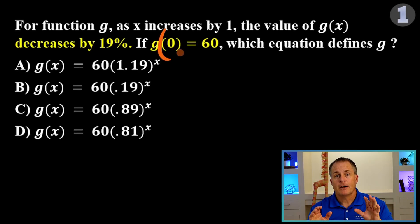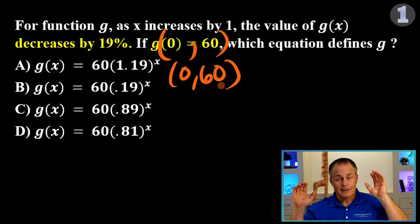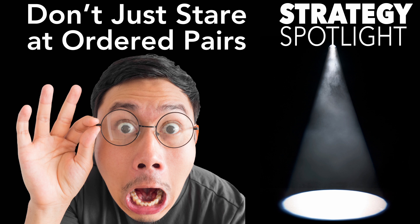Immediately, I spot the ordered pair in disguise hiding in the function notation. If g(0) equals 60, that means we have an ordered pair of (0, 60). I love ordered pairs. They solve so many problems on this test. What do we do with ordered pairs? Don't just stare at them. Just plug them in.